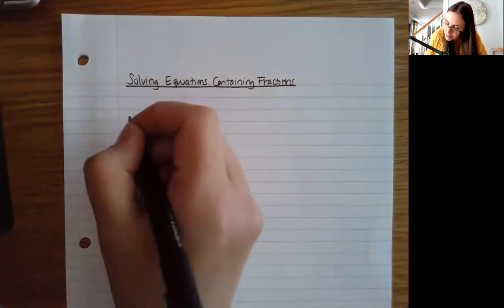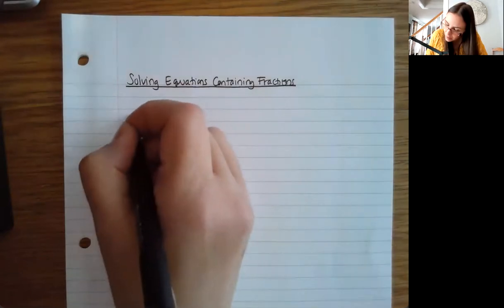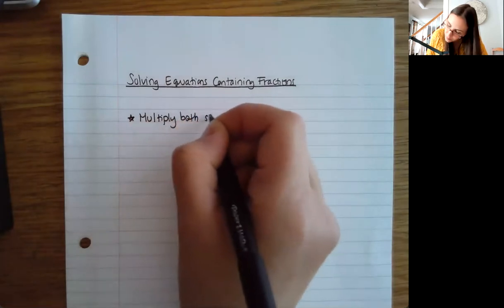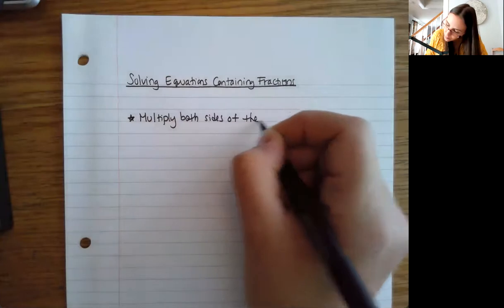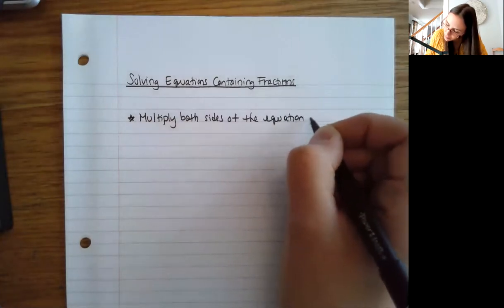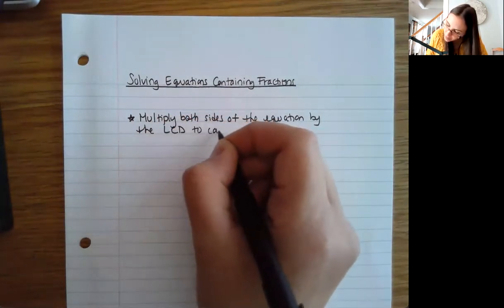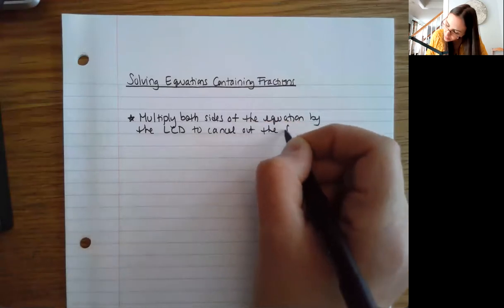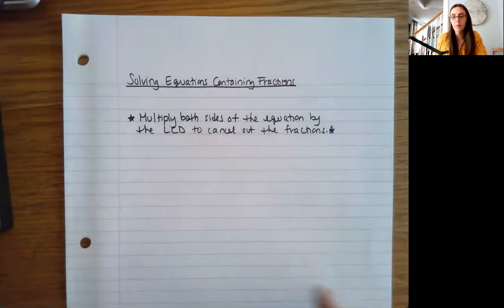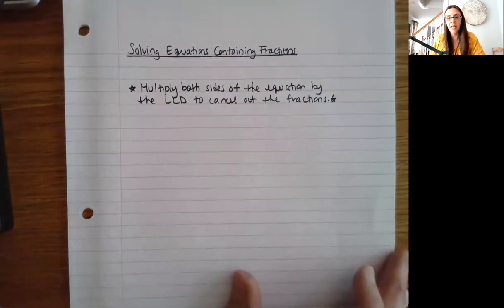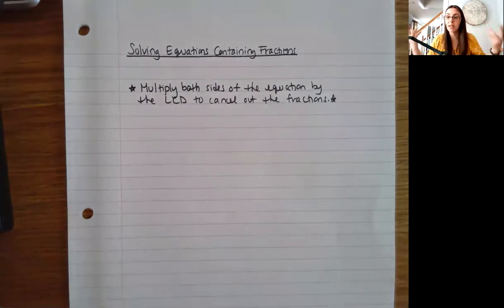What I like to do is multiply both sides of the equation by the least common denominator to cancel out the fractions. The reason it's okay to do that — if you think back to our rules for equations, it's okay to multiply or divide as long as you do it on both sides of the equation in the same way. So by multiplying both sides by the LCD, I'm not actually changing the solution.